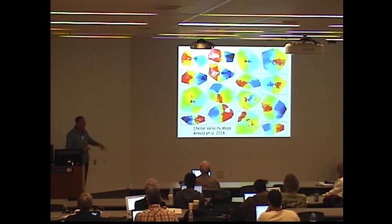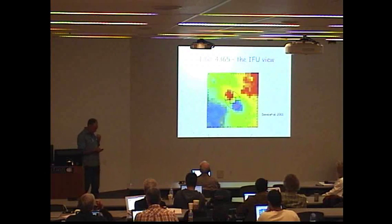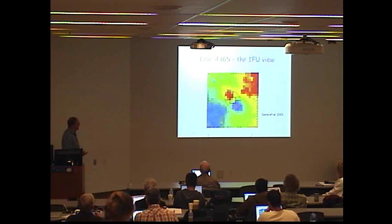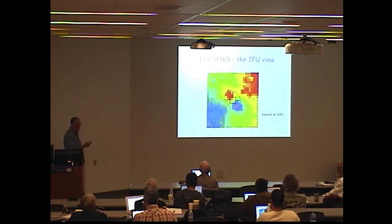We can create these 2D velocity maps for our galaxies. Here's one example of how things have changed. This is an integral field unit view of an early type galaxy. You can see some rotation going on in the central regions, this would be about 20 by 20 arcseconds central regions of this particular interesting galaxy.